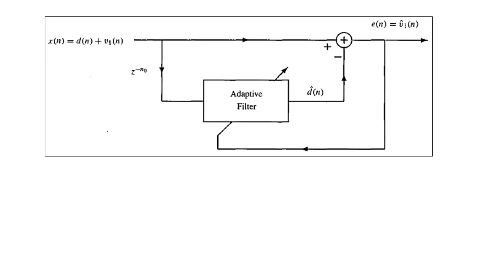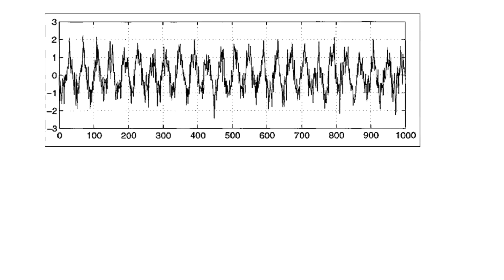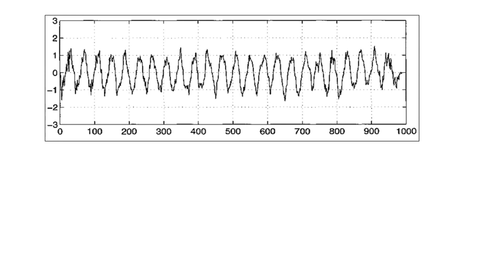The noisy process x(n) = d(n) + v1(n) is the input to the system. The corresponding output of the adaptive filter using the normalized LMS algorithm with step size 0.25 and the reference signal obtained by delaying x(n) by n₀ = 25 samples is illustrated, showing a clear improvement compared to the earlier representation.